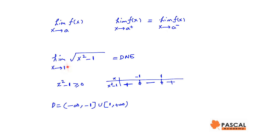For example, the limit of f of x equals square root of x squared minus 1 as x approaches 1 does not exist. The function f of x equals square root of x squared minus 1 is defined when x squared minus 1 is greater than or equal to 0. x squared minus 1 equals 0 when x is 1 or negative 1. For x's between negative 1 and 1, x squared minus 1 is negative. For x's greater than 1 or less than negative 1, x squared minus 1 is positive.